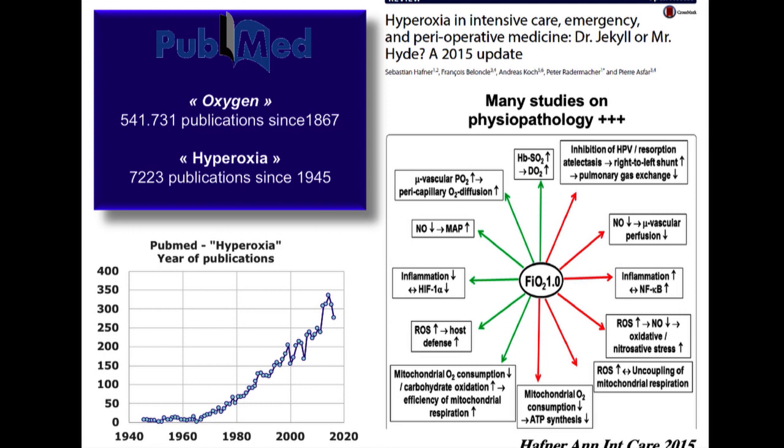The main reason why hyperoxia should be deleterious is mainly because it increases oxidative stress. We all know that oxidative stress may increase apoptosis and inflammation. There are also very established findings that oxygen by itself has deleterious vasoconstrictive effects.